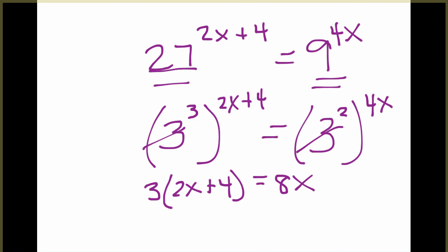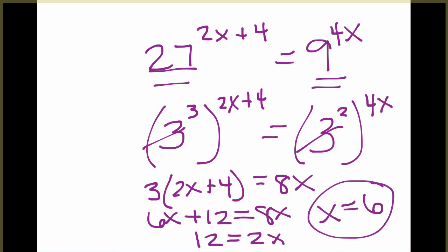On the left, we'll have to distribute the 3, so it becomes 6x plus 12 equals 8x. If we move the 6x to the other side, we get 12 equals 2x, divide by 2, and x is equal to 6.